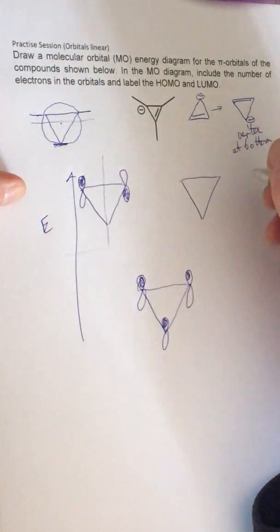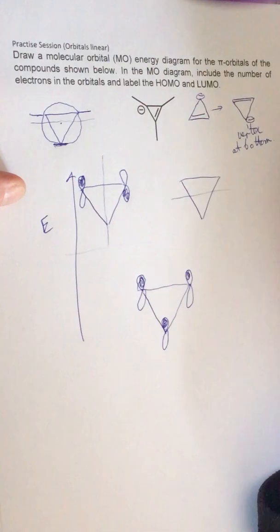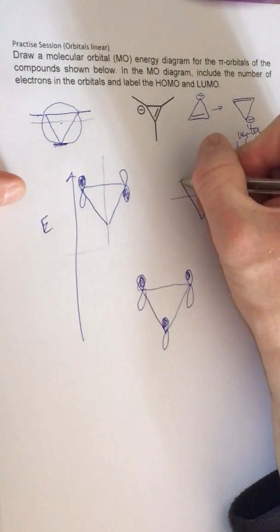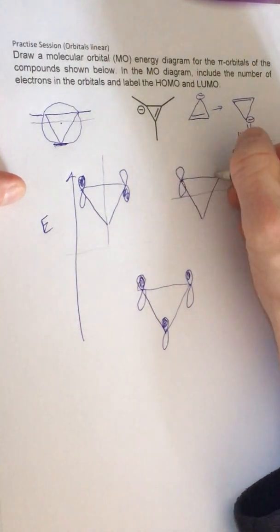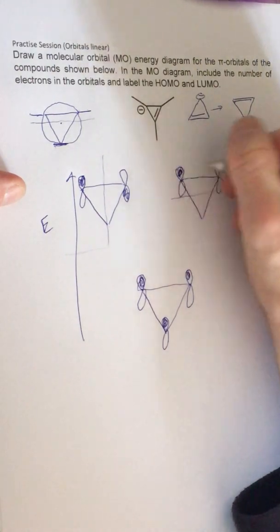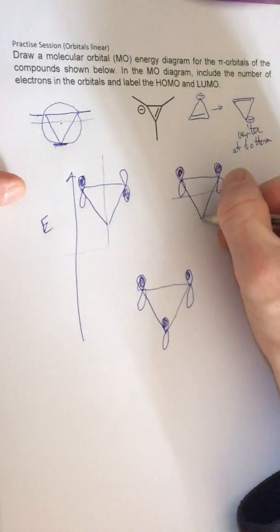The other one is going to go across the faces like that, so this will have a bonding interaction at the top but then an anti-bonding one below.